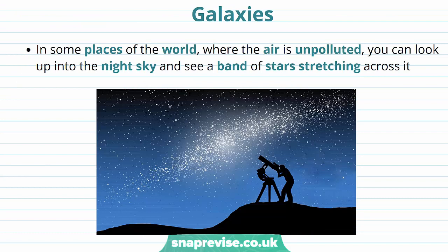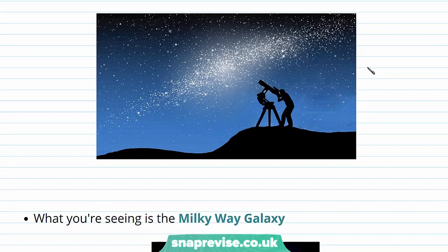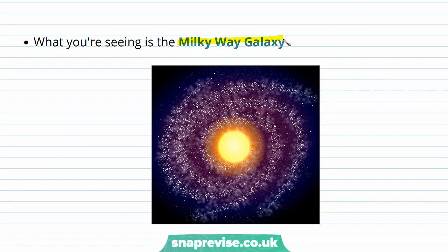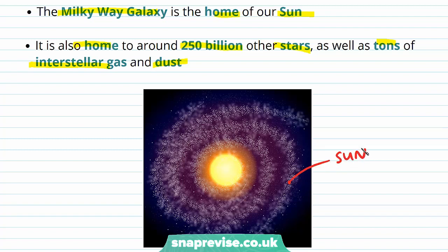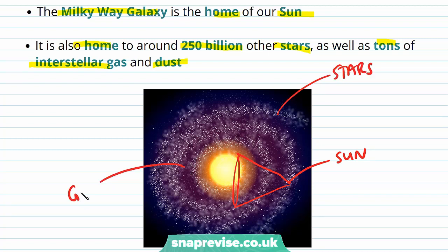One of the most important components of the universe are galaxies. In some places in the world where the air is unpolluted, you might be able to look up into the night sky and see a band of stars stretching across it — what scientists call the Milky Way galaxy. This Milky Way galaxy is the home of our Sun, around 250 billion other stars, as well as lots of interstellar gas and dust. Being inside the Milky Way, when we stand on Earth looking out, we see this section of it as a bright band of stars across the sky.